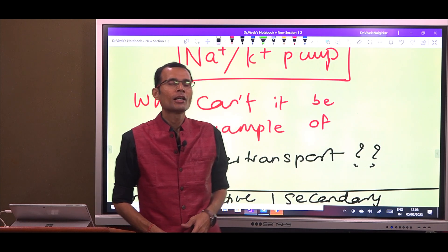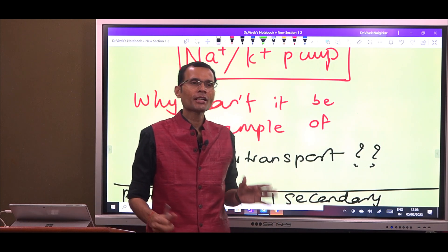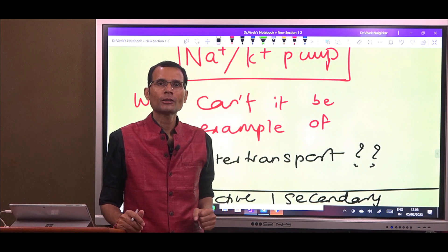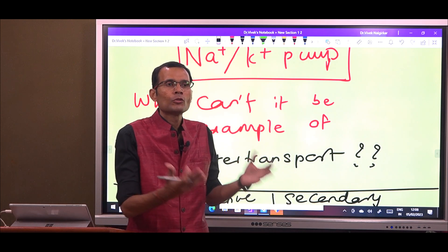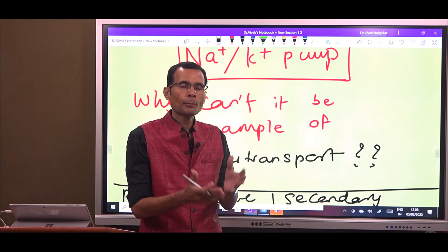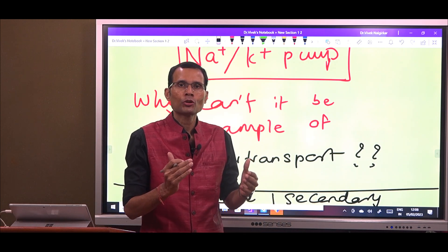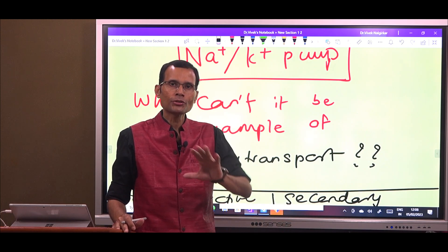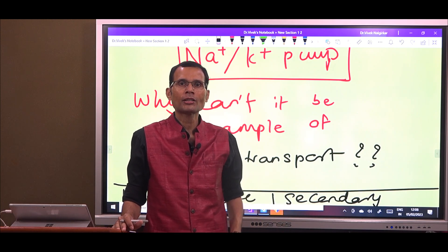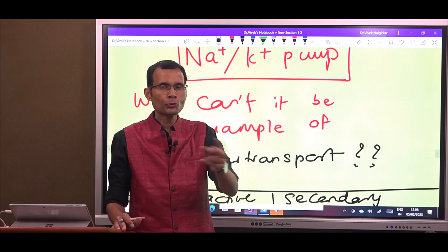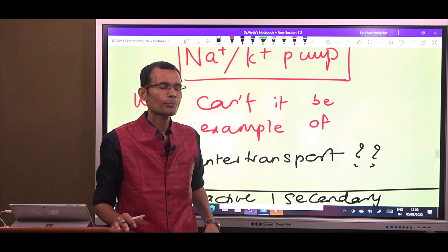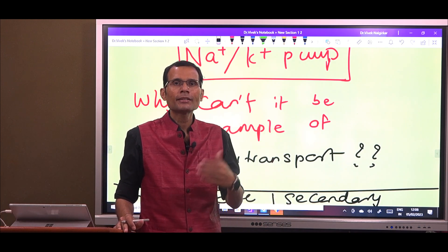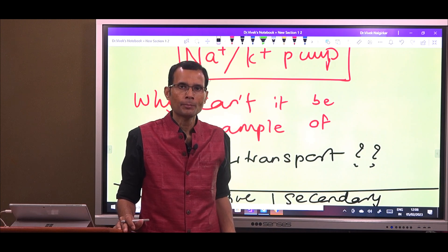Hello friends. The other day I was visiting the University of Iowa and I asked a student: what is an example of counter transport, or antiport, or exchange? Secondary active transport has two types — co-transport and counter transport. He said the example is the sodium-potassium pump.